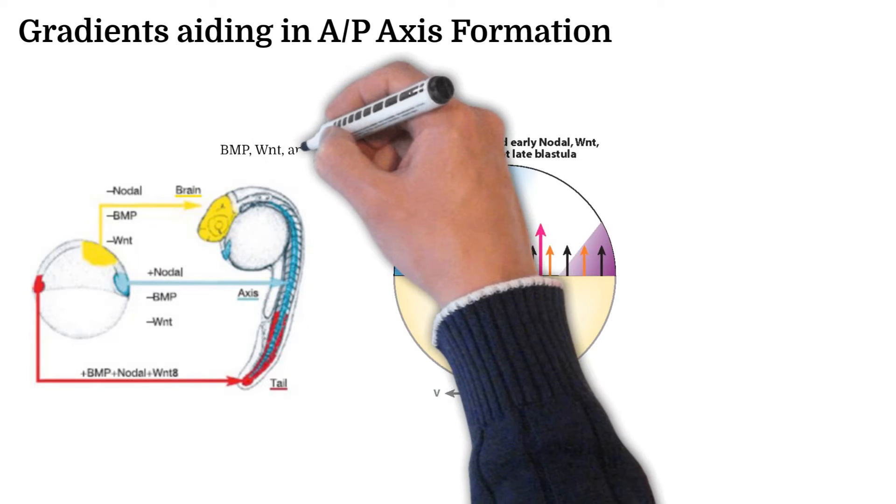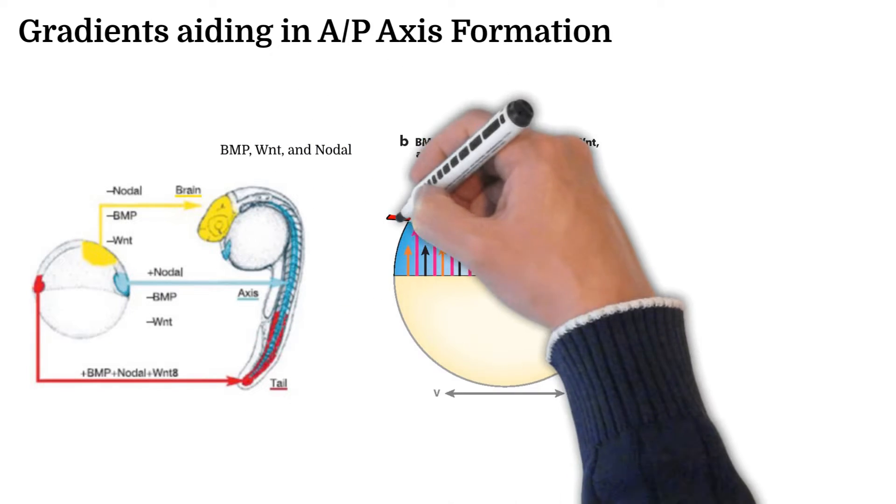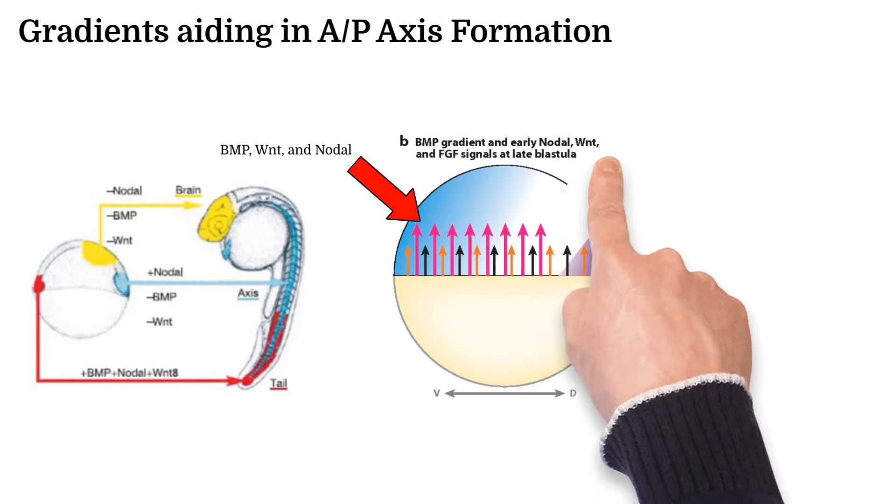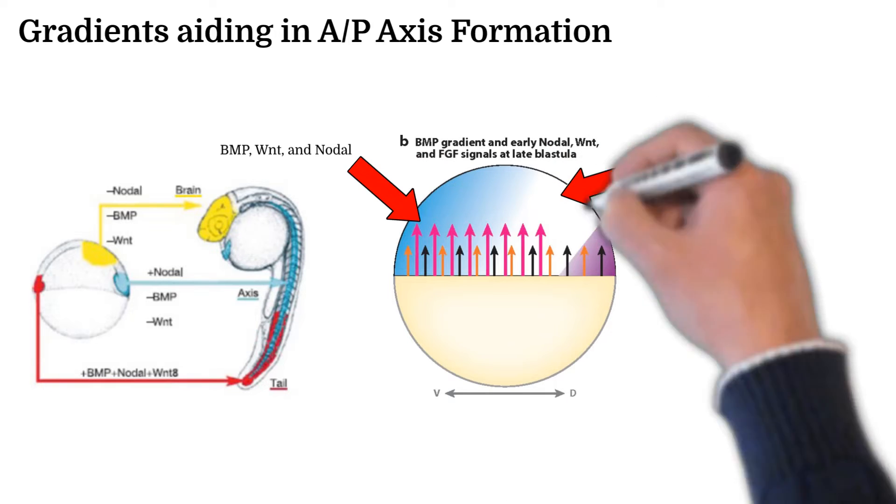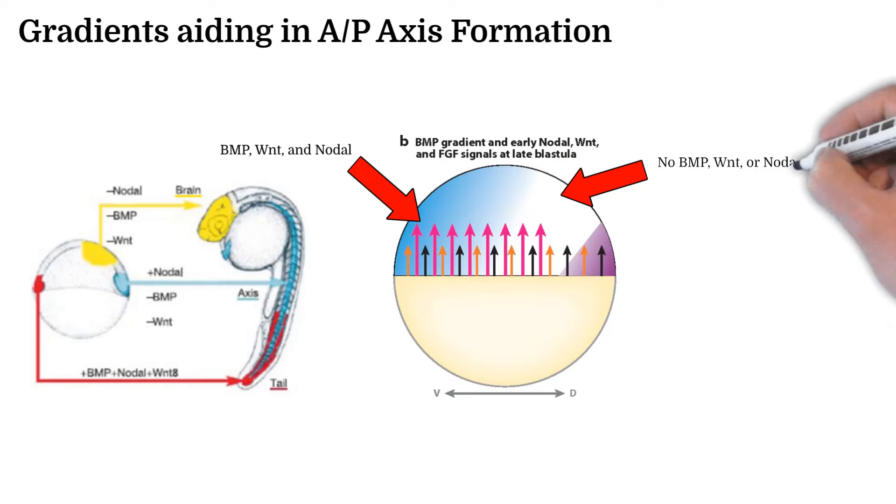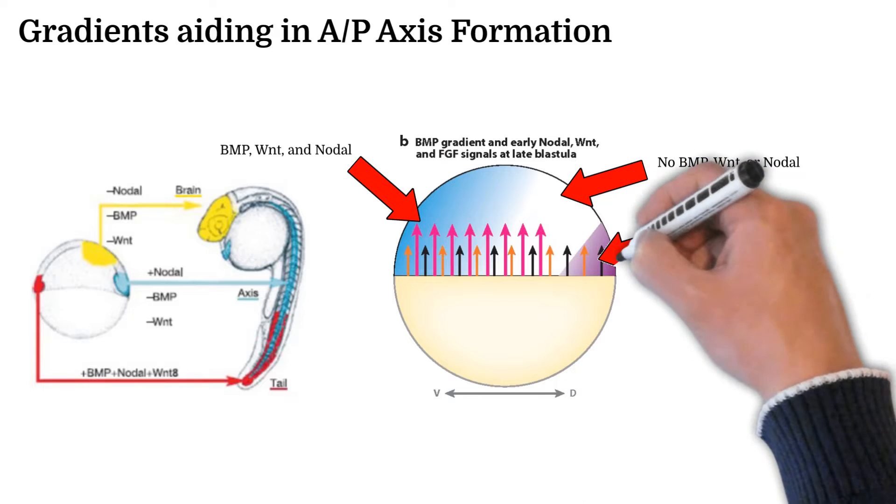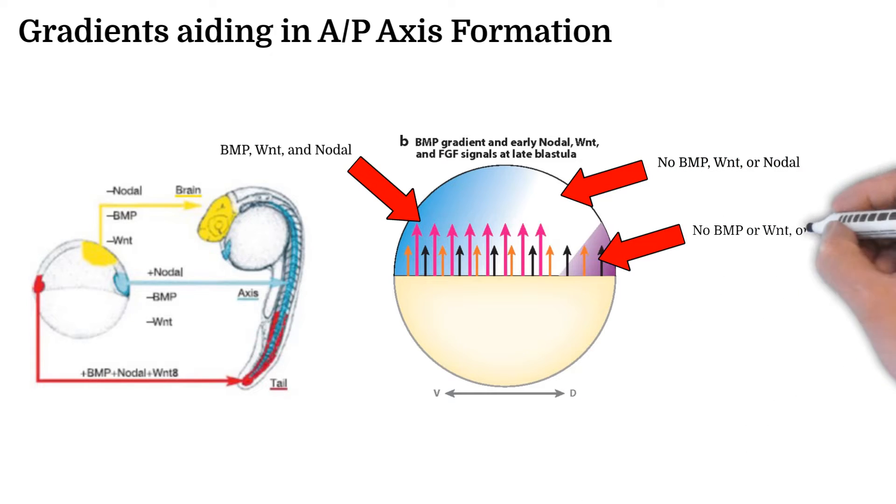The one with all three in high concentrations will result in the tail. The one with none of all three in high concentrations will result in the brain. And the one with only a high concentration of nodal will derive the main spinal cord.